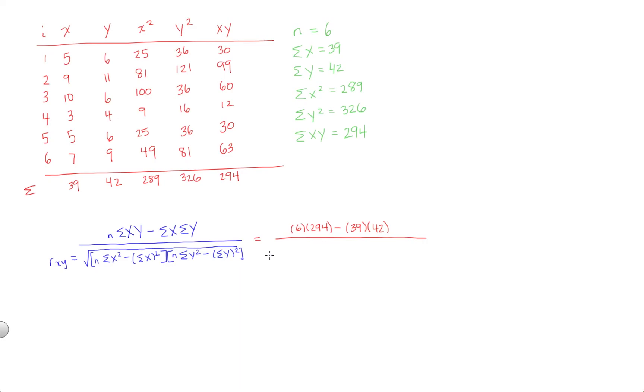Don't forget the square root. That's the first step, and I often see people making that mistake, and it costs them the problem. So square root of whatever follows. So here we have n times sigma x squared. So 6 times 289 minus, notice the parentheses here, very important, sigma x squared. So we're not going to put 289, we're going to put 39 squared, 39 squared.